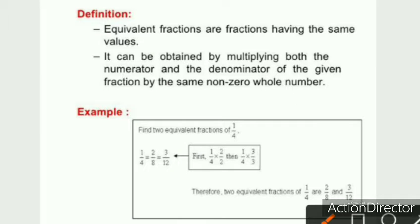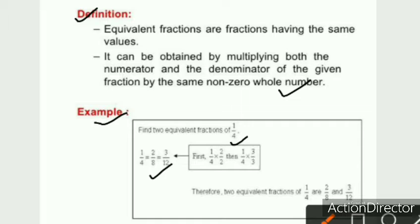Now we will discuss equivalent fractions. Equivalent fractions are fractions having the same values. They can be obtained by multiplying both the numerator and the denominator of the given fraction by the same non-zero whole number. Here we take an example: find two equivalent fractions of one upon four.